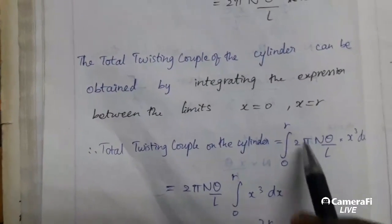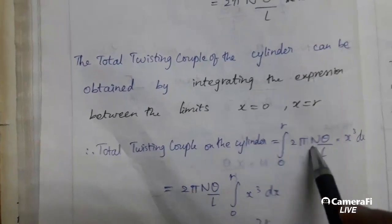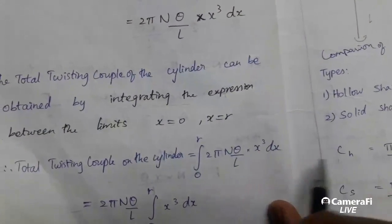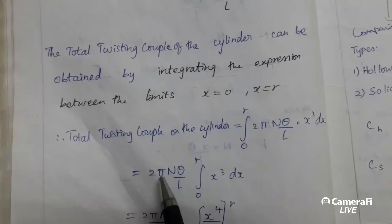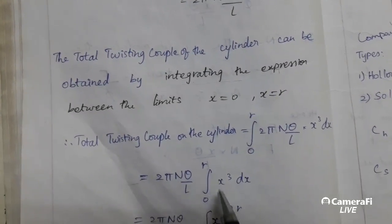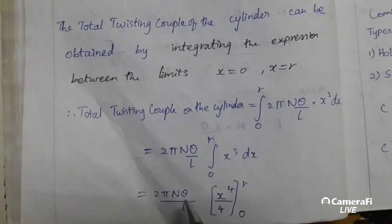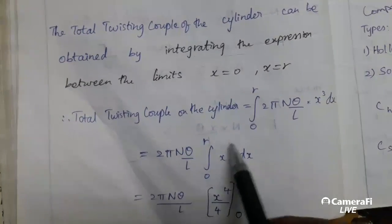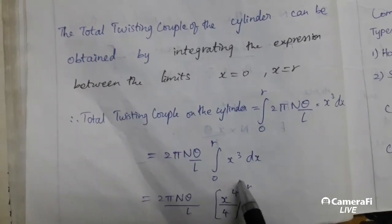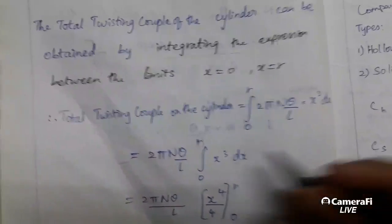Total twisting couple on the cylinder equals the integration from 0 to R of 2 pi N theta by L into X cubed DX, which equals 2 pi N theta by L times the integration from 0 to R of X cubed DX. This equals 2 pi N theta by L, where X cubed integrates using the formula X to the power N equals X to the power N plus 1 divided by N plus 1.